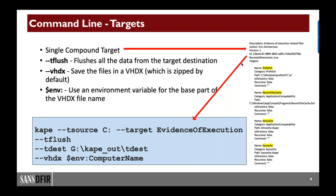In this case, the target is 'evidence of execution,' which is a compound target pointing to several other targets — so in this execution we're grabbing Prefetch, AmCache, SysCache, etc. The `t+` option means delete any previous data in the output folder before writing new data. The `tdest` tells CAPE where to write the files. The `tag vhdx` option tells it to put all collected data in a VHDX file, and the option after that is the prefix to use for that file — in this case, a PowerShell environment variable that inserts the computer name into the filename.